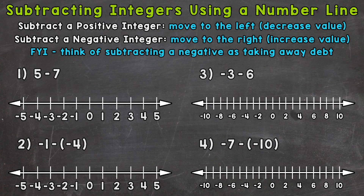Now, that one can be hard to understand. But I still remember when I was taught this, something that stuck with me and helped me understand. Think of subtracting a negative as taking away debt. When we subtract, we are taking something away. So if we subtract or take away a negative number, we are turning that into a positive because we are getting rid of the negative or debt. Something to think about as we go through our examples.